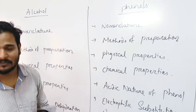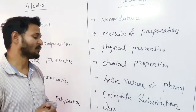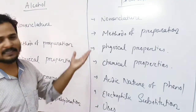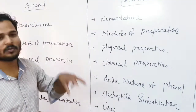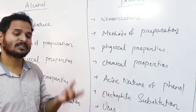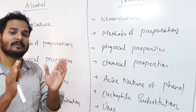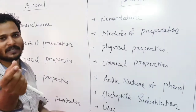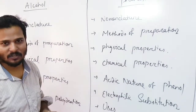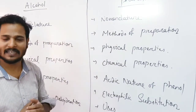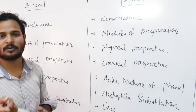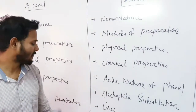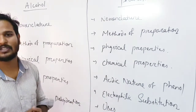Next is electrophilic substitution. We know about benzene — the OH group in phenol is a nucleophile, and it is a donating group that increases nucleophilicity. When we add aryl chloride or alkyl chloride, this substitution is called electrophilic substitution. Finally, we cover uses of phenol.